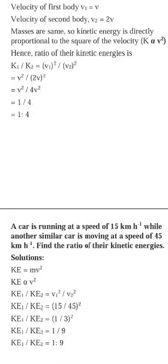A car is running at 15 km/h while another similar car (same mass) moves at 45 km/h. Find the ratio of their kinetic energies. Since mass and the half factor cancel, the ratio is directly v² by v² — that is 15² upon 45². Dividing 15 by 45 gives 1 by 3, so 1 by 3 squared gives 1 to 9. No need to convert km/h to m/s since we are dividing.